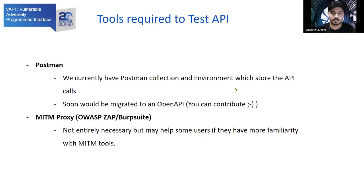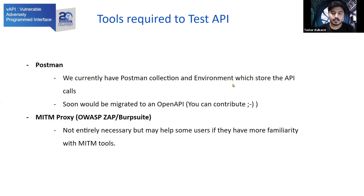For testing this environment, you can use something like Postman. We currently provide a Postman collection and environment in which you can set the environment variable for your host, so you don't have to paste your host into each request manually. The environment also maintains other environment variables, such as authentication keys that are automatically generated on your login requests. Currently we support Postman collection and environment, and soon we will be migrating to OpenAPI documentation. Contributions are always welcome — you can visit the VAPI GitHub link and try to contribute.